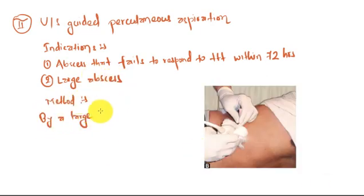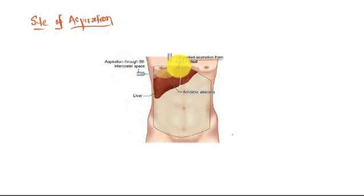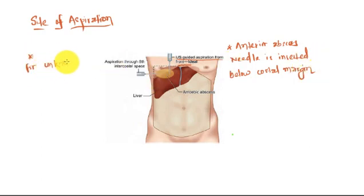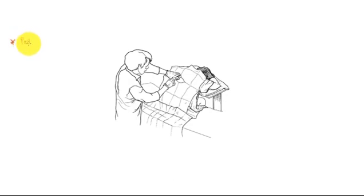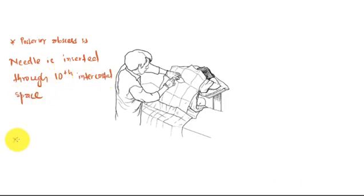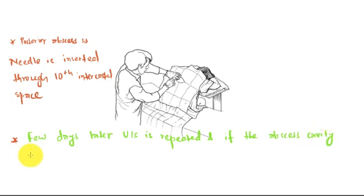For site of aspiration, the ultrasound guided aspiration from the front is the ideal site for aspiration. For anterior abscess, needle is inserted below the costal margin. And for unknown site, in the previous days, aspiration was done through the eighth intercostal space in the mid-axillary line. For the posterior abscess, needle is inserted through the tenth intercostal space. Few days later, ultrasound is repeated and if the abscess cavity has recollected or if the abscess is more than 5 cm in diameter, aspiration is repeated.